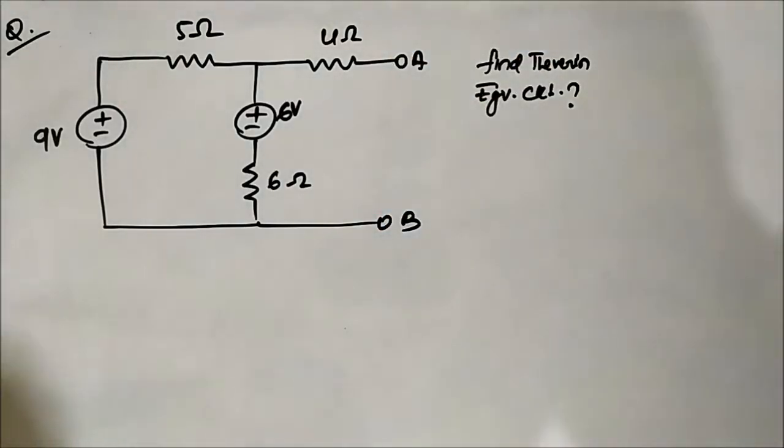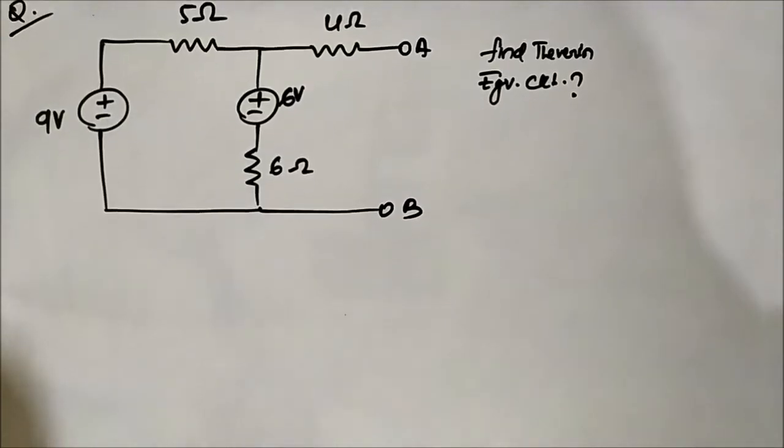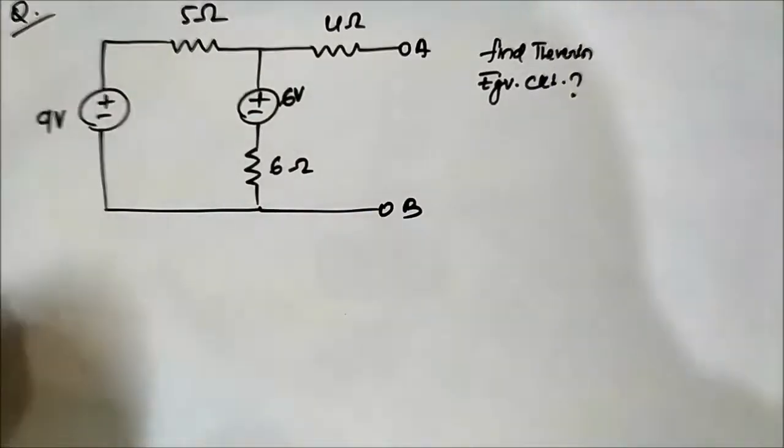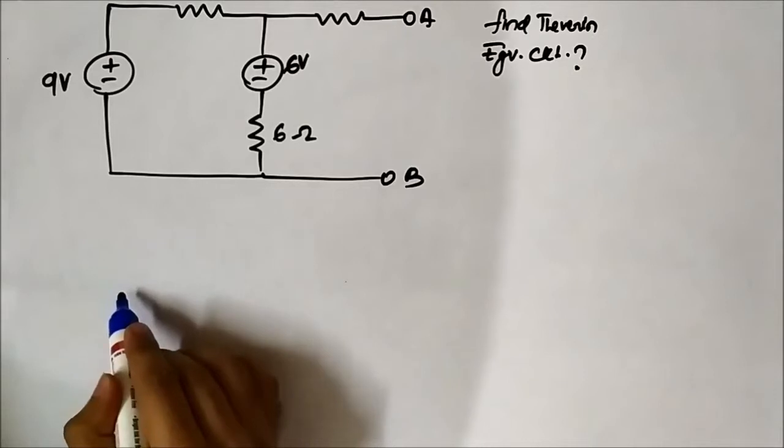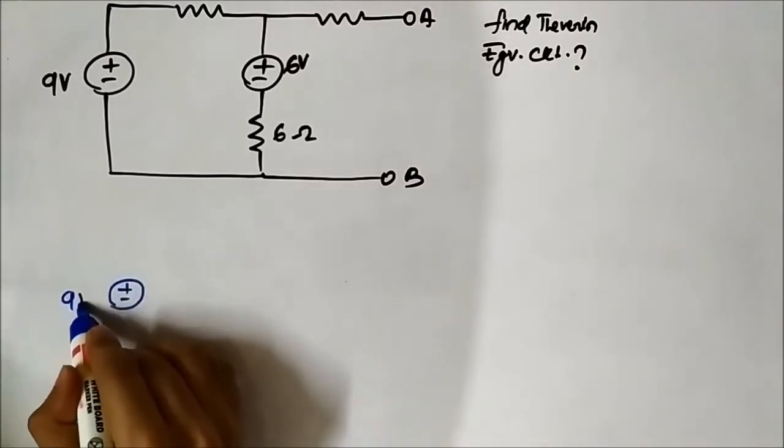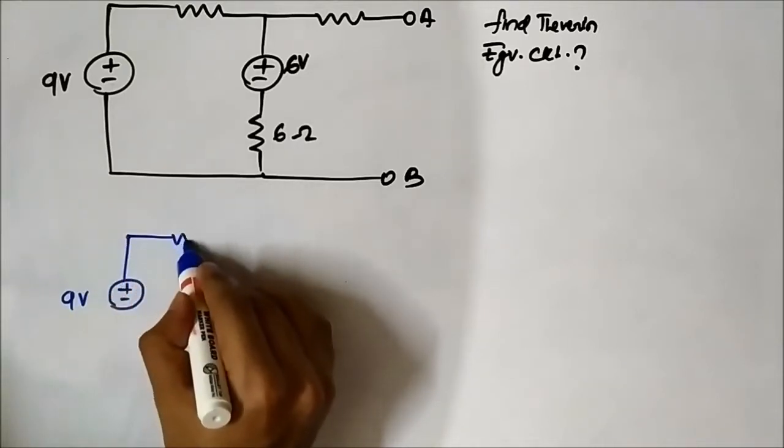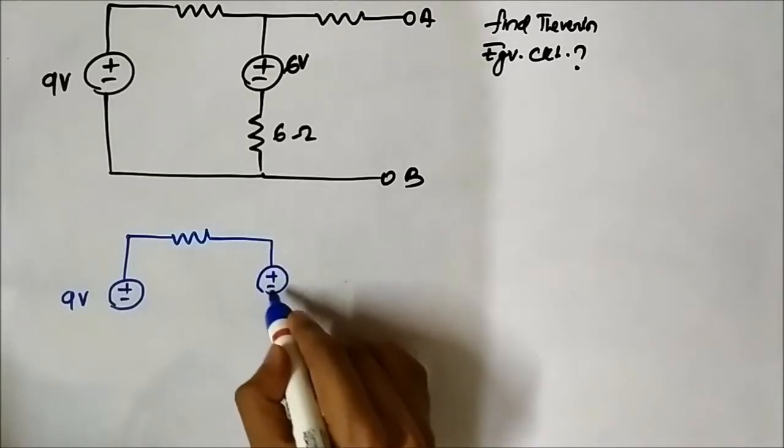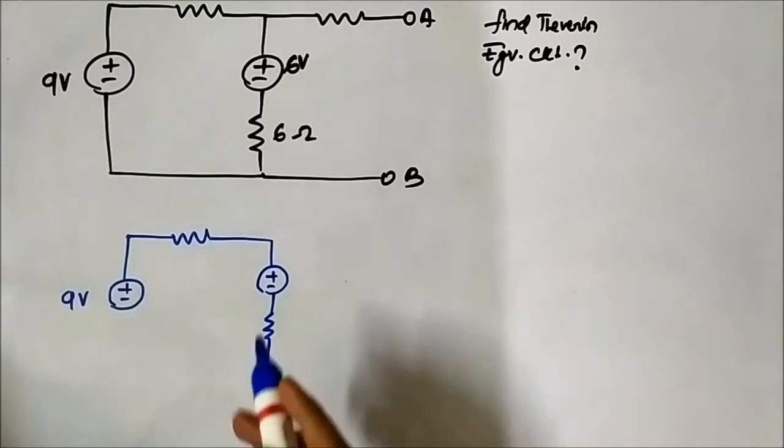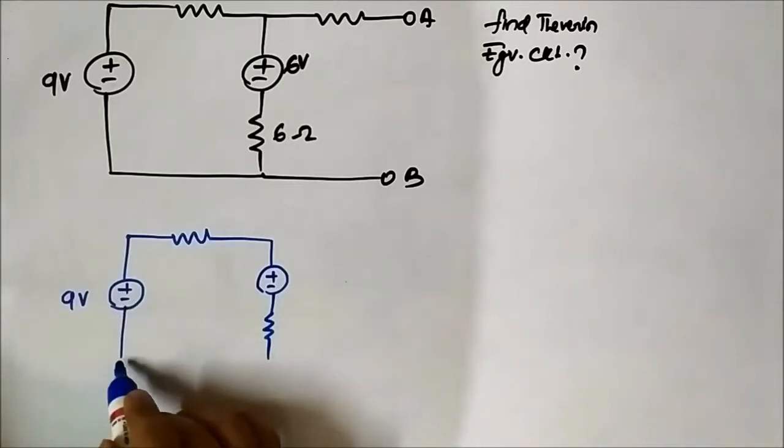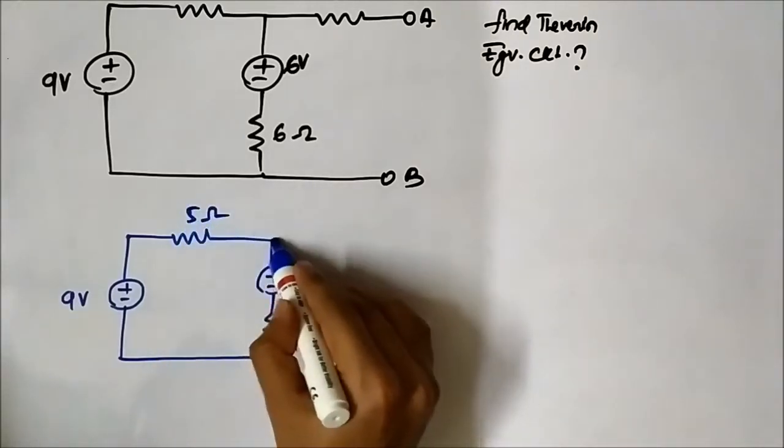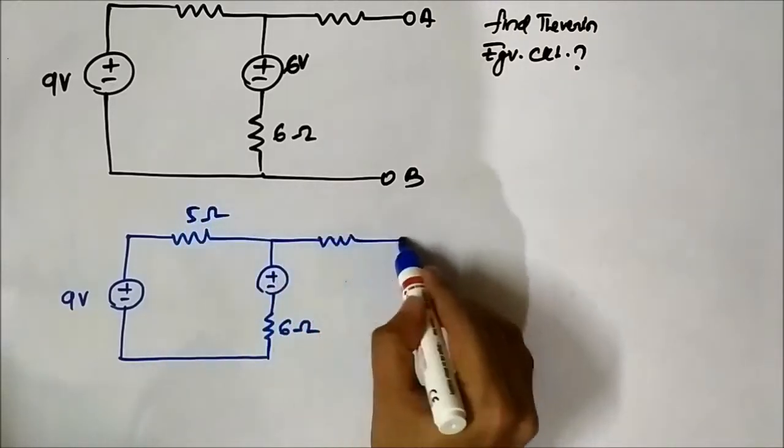First we will find the Norton current. We are doing it from the Norton, so we will find the Thevenin from the Norton equivalent circuit. For that we will redraw the circuit: 9 volt, 5 ohm, 6 ohm, and 4 ohm.